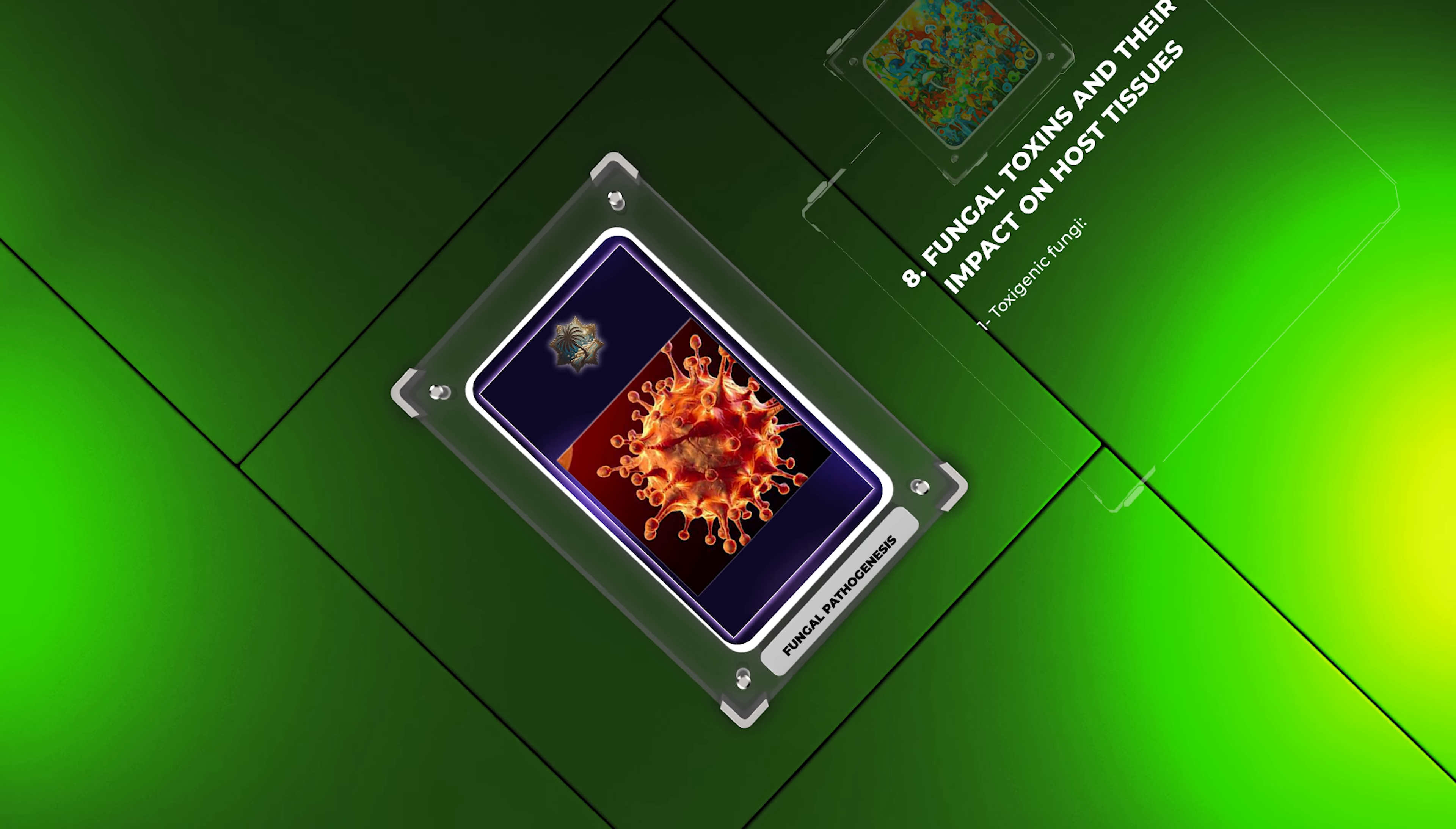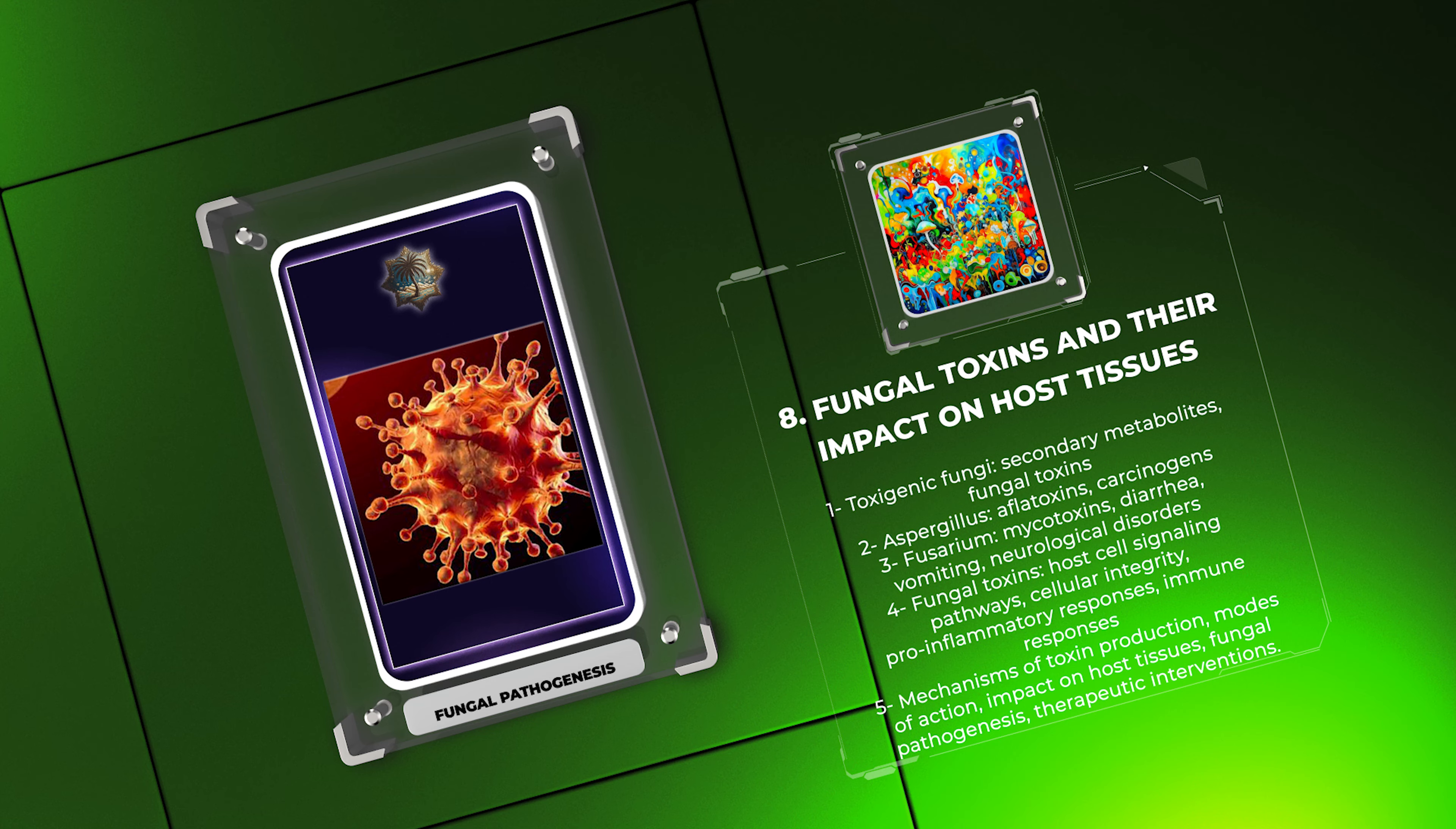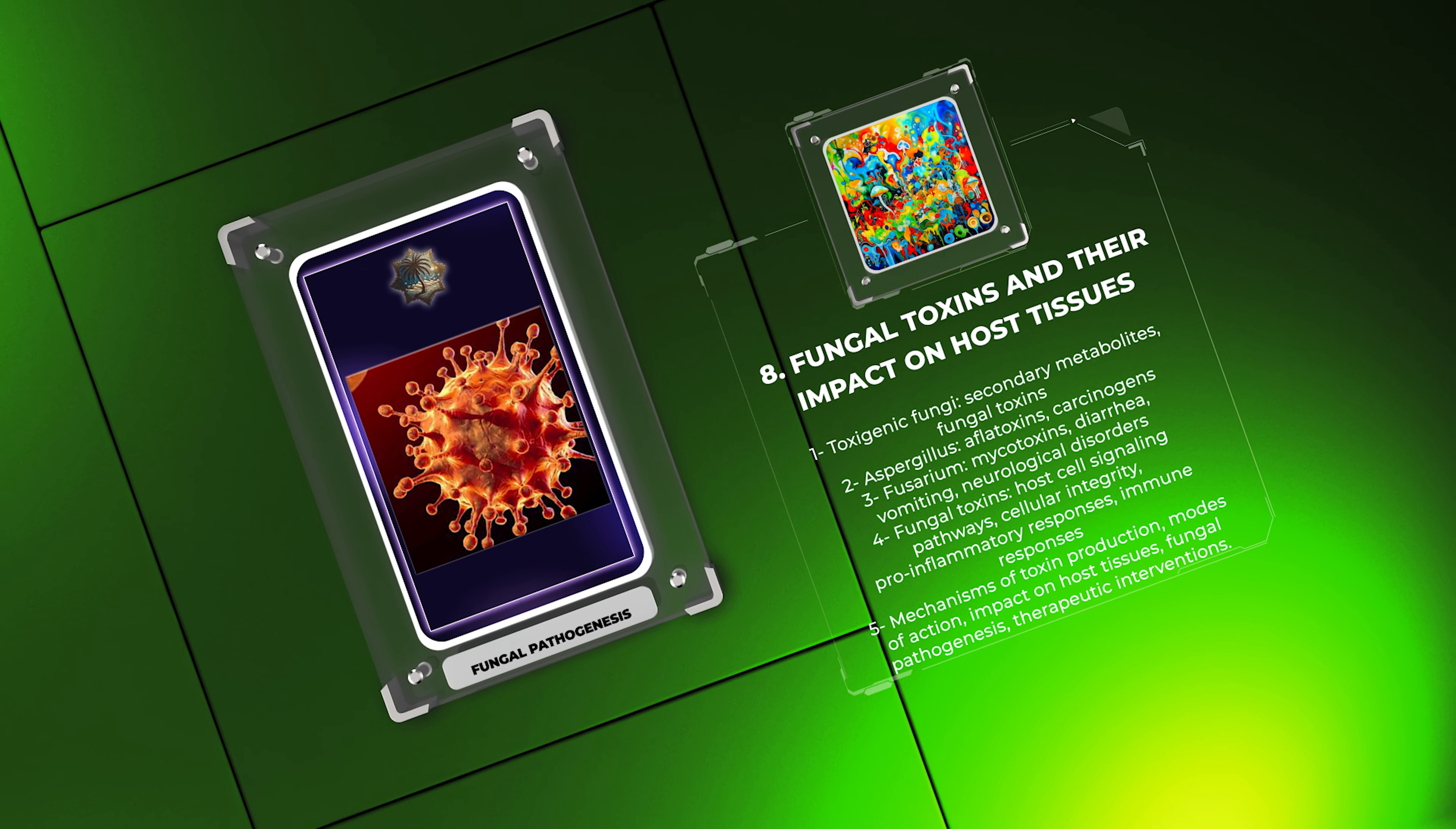Toxigenic fungi produce a wide array of secondary metabolites, collectively known as fungal toxins. These toxins have diverse effects on host tissues and can contribute to the pathogenesis of fungal infections. For instance, species of Aspergillus produce aflatoxins, which are potent carcinogens, whereas Fusarium species produce mycotoxins that can cause diarrhea, vomiting, and even neurological disorders.